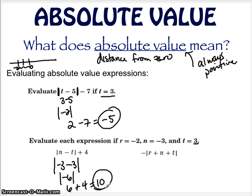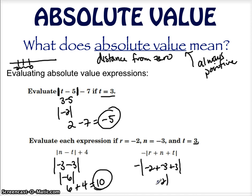Here you have a negative absolute value. So you're going to figure out what's on the inside. R is negative 2, n is negative 3, and t is 3. So negative 2 plus negative 3 is negative 5, plus 3 is negative 2. The absolute value of negative 2 is 2, and then this negative sign makes it negative. So negative 2 is your answer.